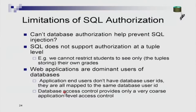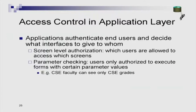Today, fine-grained authorization — where you allow people to see only certain rows but not others — is implemented only at the application level, not at the database. Because of this, if you can bypass the application authorization in some way, you can do anything to the database. The applications implement certain checks, such as which users are allowed to access which screen and with what parameters. For example, a screen might show grades to faculty members of CSE students only. These forms of access control cannot today be implemented in SQL, but are typically implemented in the application layer.